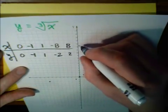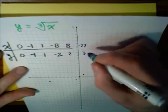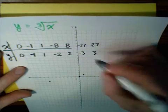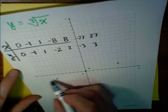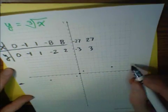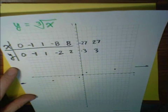The next cube roots we have are negative 27, which is negative 3, and 27, which is 3. So that's going to be way, way off the chart here and way over here. So let's graph this.